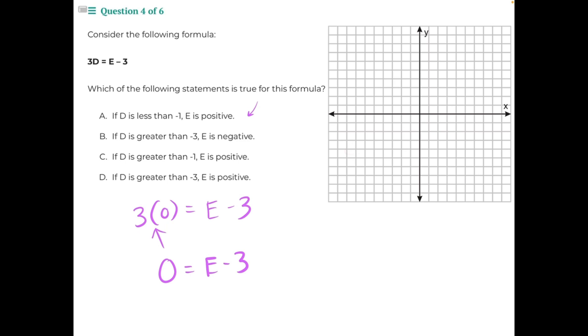3 is being subtracted from e, so we need to do opposite operations to balance the equation and isolate the variable. This will cancel out and give us 0, leaving behind e. 0 plus 3 will give us 3. So our e intercept is 3. When d is 0, e is 3.